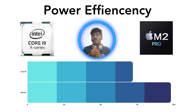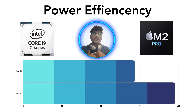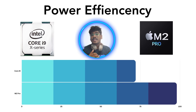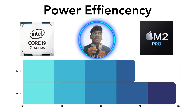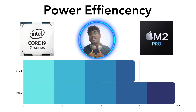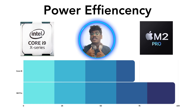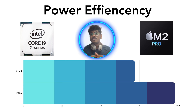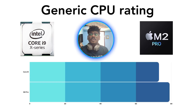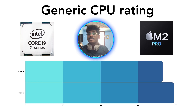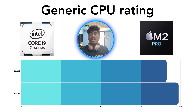In the power efficiency category, which measures electricity consumption, the Intel Core i9 scores 72 out of 100, while the M2 Pro scores a surprisingly high 98 out of 100. So in power efficiency, the M2 Pro wins clearly.